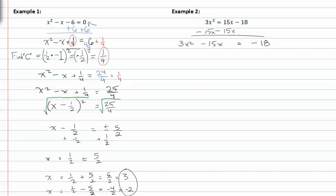In step two, we need to divide everything by the leading coefficient of the x squared term. This gives us x squared minus five x equal to negative six. Next, I need to find c. c is equal to one half negative five squared, which gives me negative five halves squared, which equals twenty-five fourths.